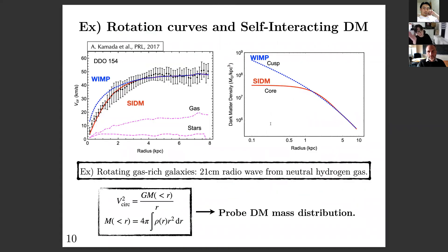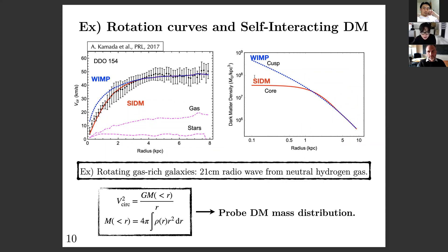One way to observe central cores of dark matter halos is through rotation curves. For rotating gas-rich galaxies, neutral hydrogen gas acts as a tracer for the total gravitational potential. The black data points show the observation; the blue line — the WIMP dark matter prediction — doesn't agree well with observations in the central region because WIMP dark matter predicts a cuspy central density profile. For self-interacting dark matter (SIDM), the prediction is a constant-density core, as shown in the right panel, making the rotation curve prediction agree better with observations.